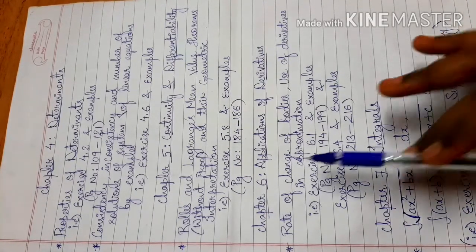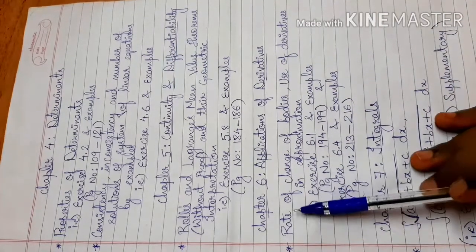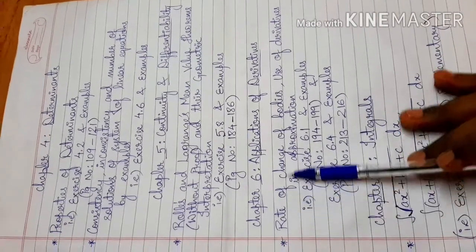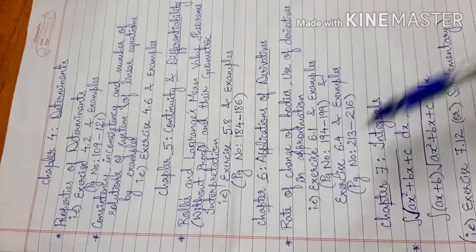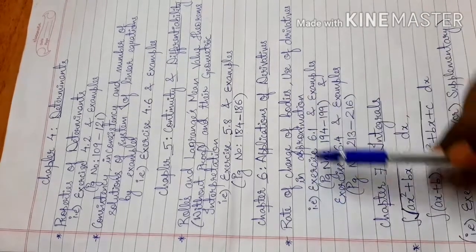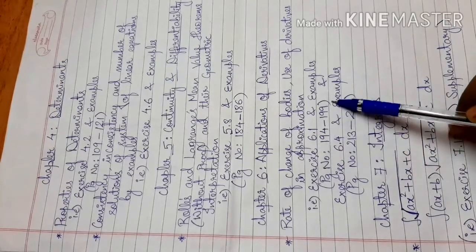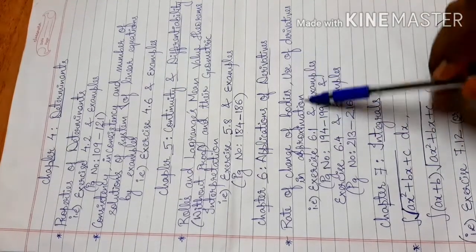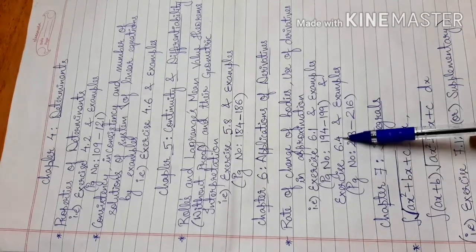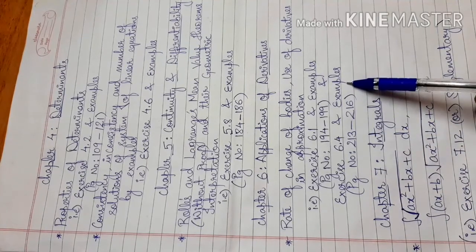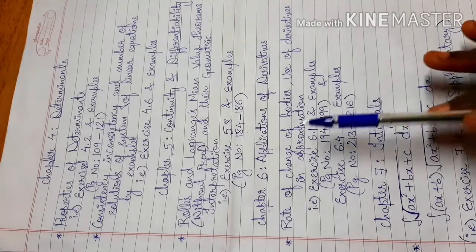Next is Chapter 6, Applications of Derivatives. There are two deleted topics. First, Rate of Change of Bodies — Exercise 6.1 and related examples, page number 194 to 199. Second, Use of Derivatives in Approximation — Exercise 6.4 and related examples, page number 213 to 216. So these two topics are deleted.